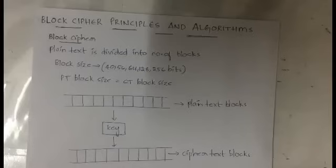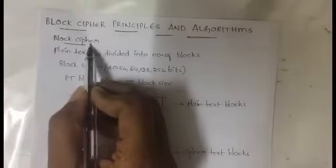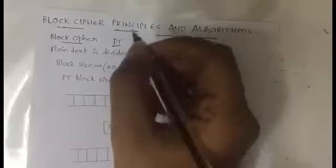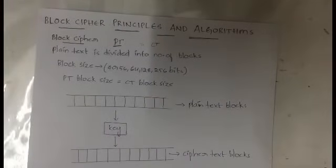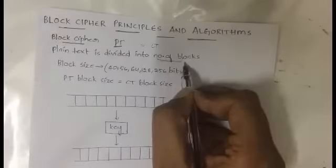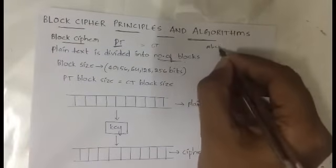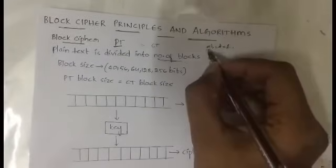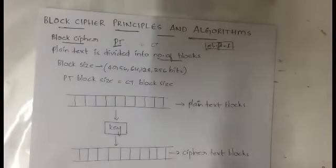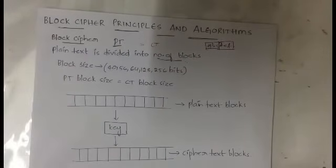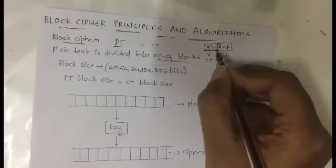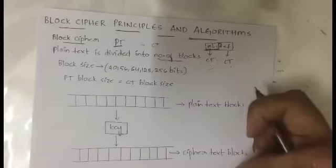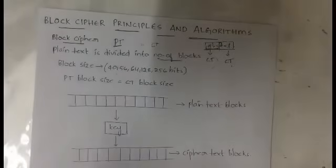We will be learning about each and every algorithm in detail in individual videos. First, what do you mean by block cipher? In block cipher, we have plain text, and our main motive is to convert that plain text into cipher text so that the attacker or third person cannot understand what we are sending. What we do is divide the plain text into a number of blocks. For example, if you have A B C D E F as your plain text, you divide it into A B C as one block and D E F as one block. After dividing, we convert each individual block into a cipher text block.